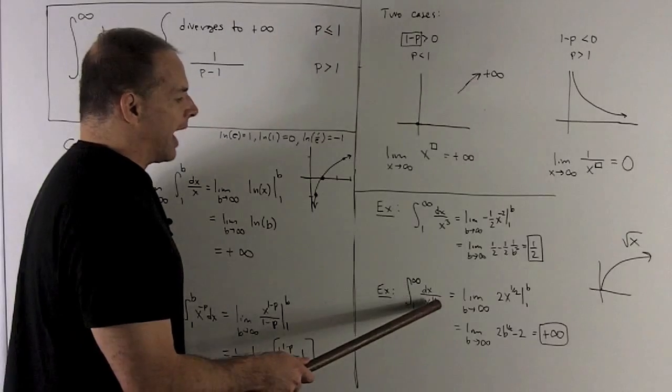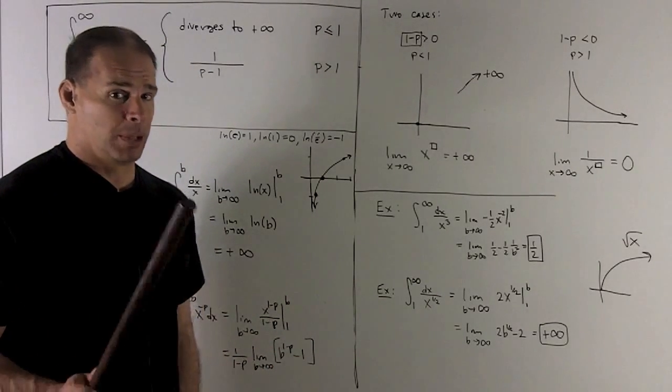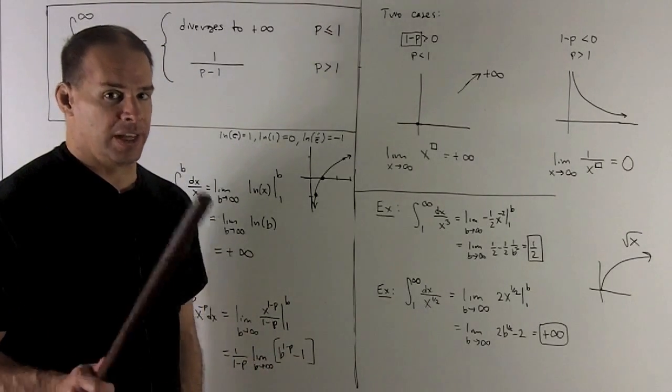So the limit here is going to be plus infinity. And so when I have p equal to 1 half, we have divergence to plus infinity. So the examples check out.